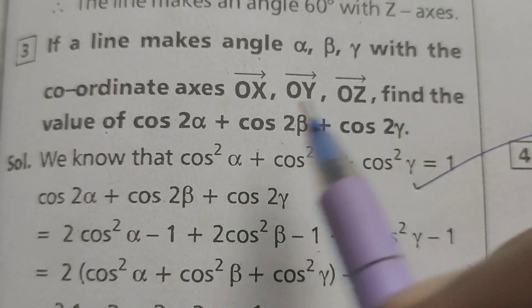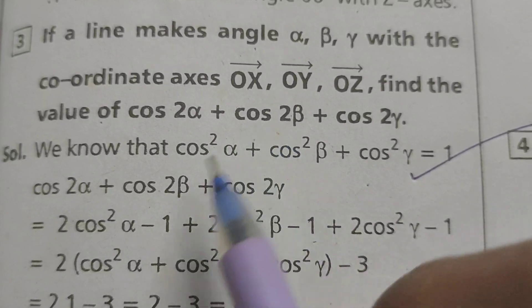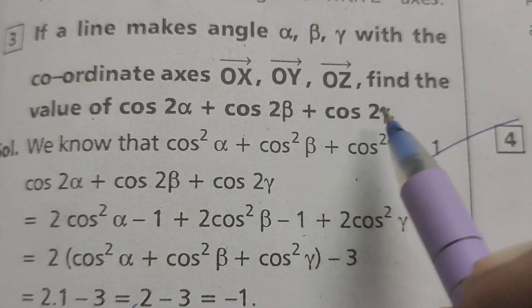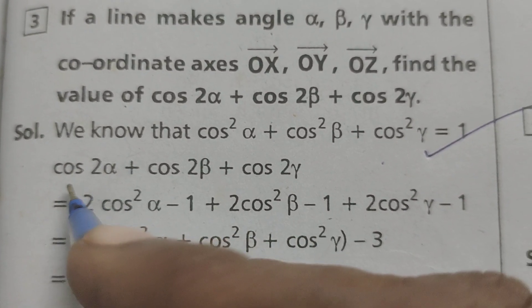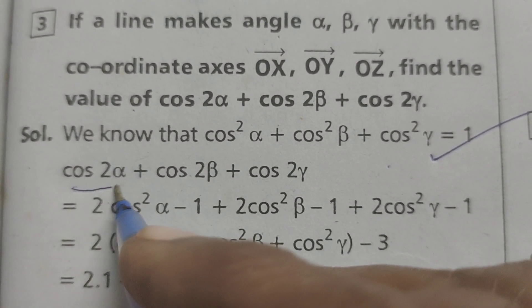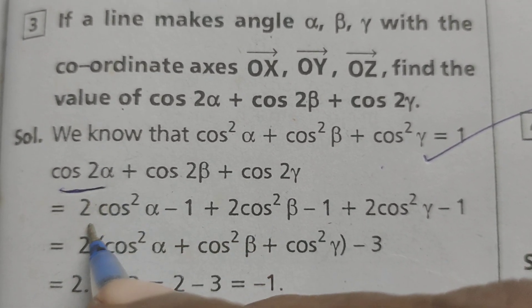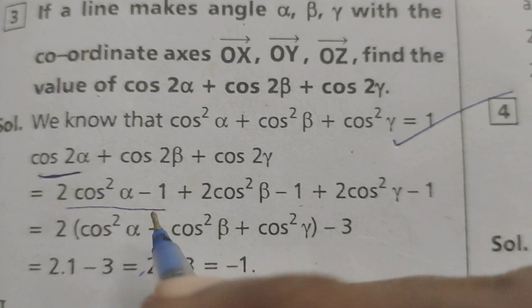Here find this value means cos2α + cos2β + cos2γ. First of all, according to this trigonometric formula, cos2α means 2cos²α minus 1.